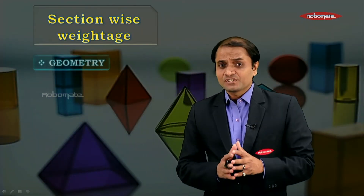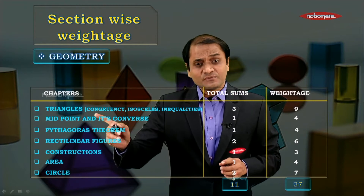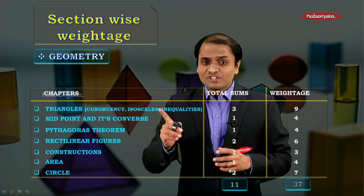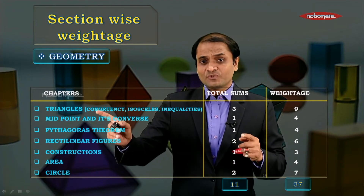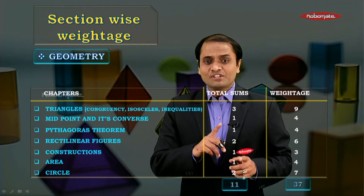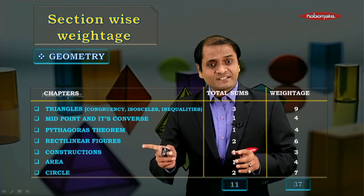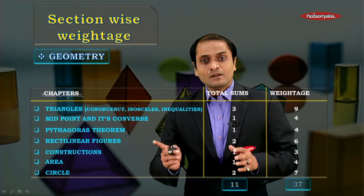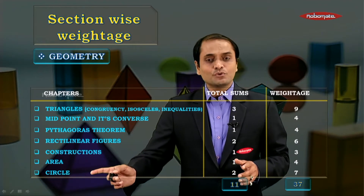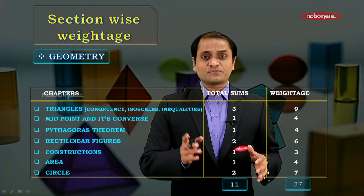The next section-wise weightage is for the section of geometry. The chapters included here are triangles — made up of three subtopics: congruency, isosceles, and inequalities. You can expect one question from each subtopic, three marks each, so the weightage of triangles is nine marks. You could get one question from midpoint and its converse for four marks, one from Pythagoras for four marks, two from rectilinear figures for six marks, one from construction for three marks, one from area theorems for four marks, and two from circle — one for three marks and one for four marks.